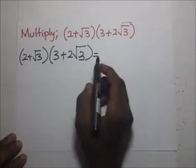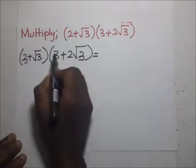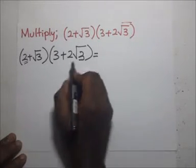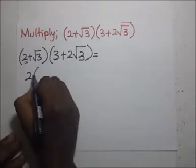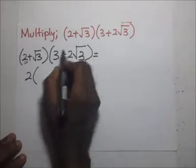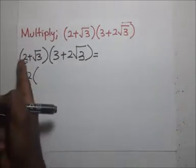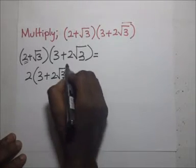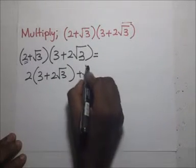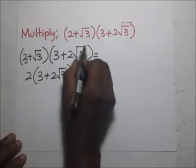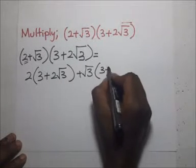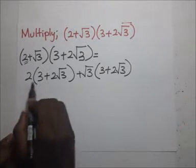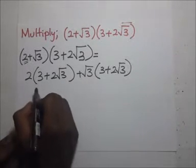We are going to multiply the bracket, so it's going to be 2 times this whole bracket, then plus √3 times this whole bracket. So we have 2 times (3 + 2√3), then plus √3 into (3 + 2√3). We go ahead and open brackets: 2 times 3 is going to be 6.